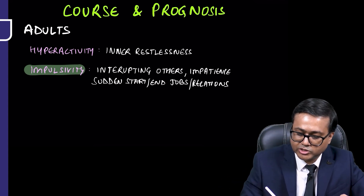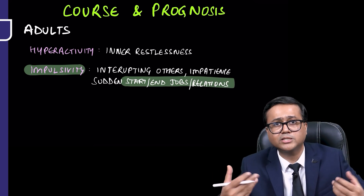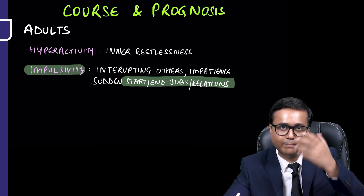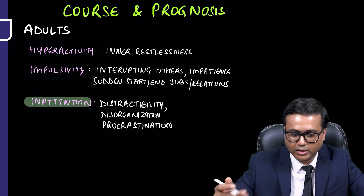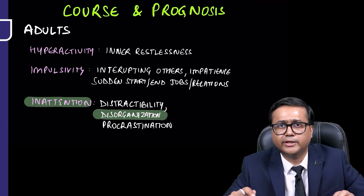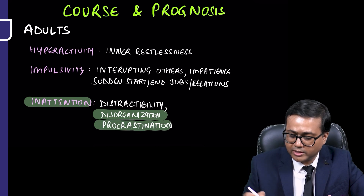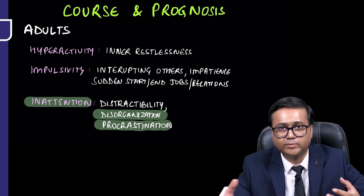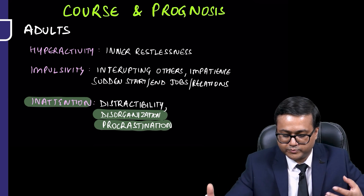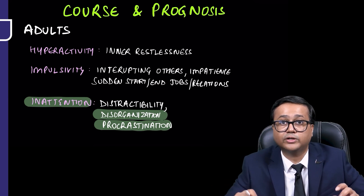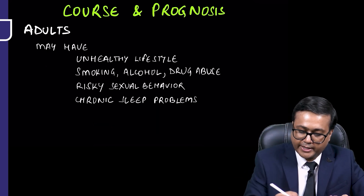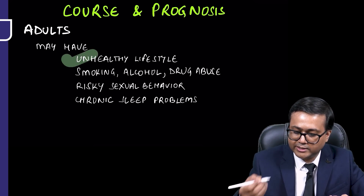Impulsivity in adults may manifest as interrupting others, being impatient, and making sudden erratic decisions in jobs or relationships. Inattention may present as distractibility, disorganization, missing appointments, procrastination, inability to finish tasks on time, and making many careless mistakes.